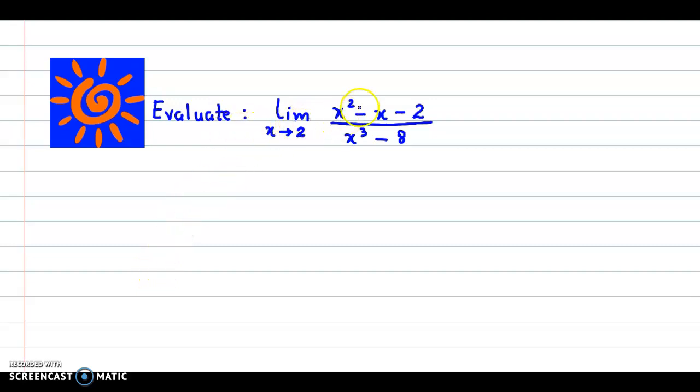Evaluate the limit of x squared minus x minus 2 upon x cubed minus 8 as x approaches 2. Let us assign a name to this limit. Let L be equal to the limit as x approaches 2 of the function x squared minus x minus 2 upon x cubed minus 8.